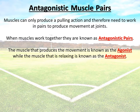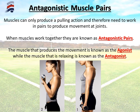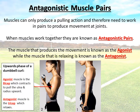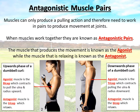Within that pair, one muscle produces the movement — we refer to that as the agonist. The muscle that is relaxing is known as the antagonist. For example, in a dumbbell curl, to bring the dumbbell from position one up to position two, the agonist is the bicep because it is contracting and pulling the ulna and radius upwards. At the same time, the tricep on the back of the arm is relaxing — it's the antagonist. However, to return the dumbbell down, they switch roles: the tricep becomes the agonist as it contracts and pulls the ulna and radius back down, while the bicep must relax and becomes the antagonist.